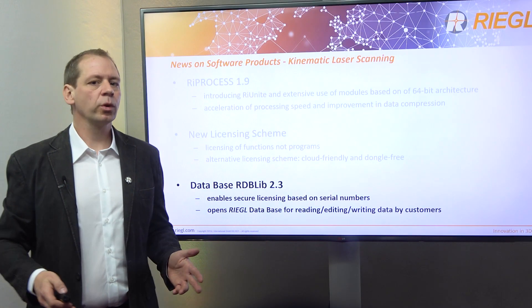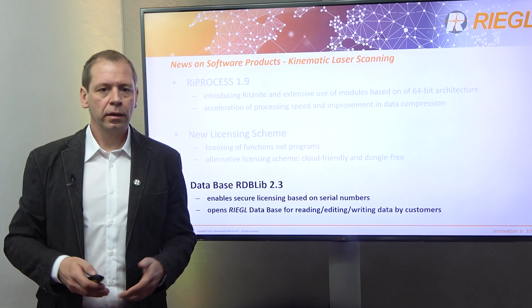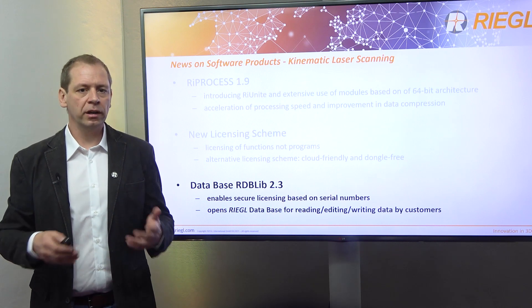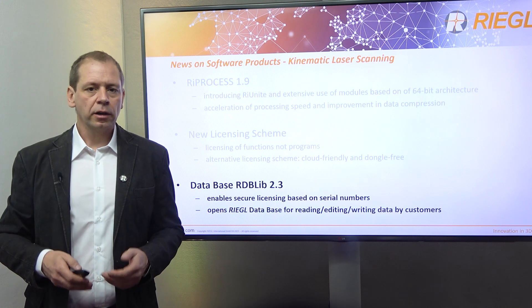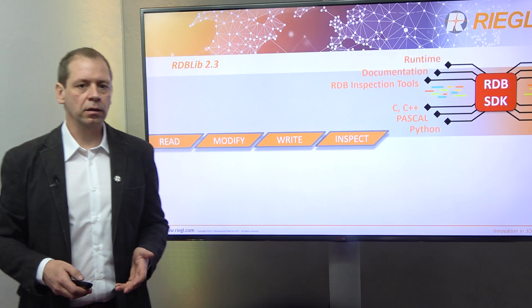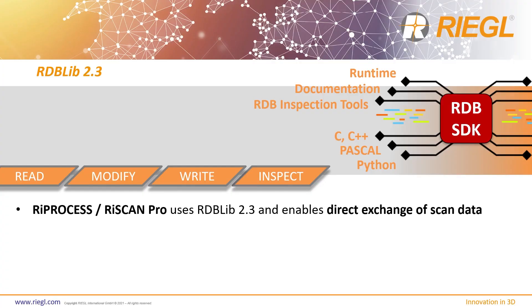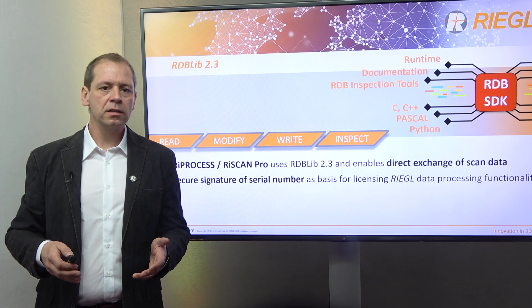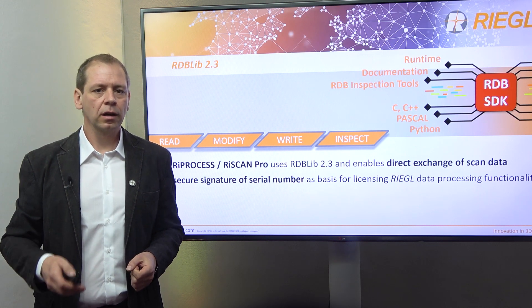The Regal RDB database is one of the keys to high processing speed, fast access to 3D scan data, and low data volume at the same time. It enables secure licensing based on serial numbers of distinct instruments. The new RDB lib 2.3, a freely available programming library, opens the RDB database for reading, editing, and writing to our customers. The RDB lib is a performant library for accessing real point cloud data and is therefore utilized by our own software, RIPROSIS and RISCAMPRO. It enables direct exchange via drag and drop of scan data acquired from kinematic laser scanning platforms as well as static terrestrial laser scanners. Furthermore, the RDB lib is the basis for licensing data processing functionality by including a secure signature derived from the instrument serial numbers included in each processed file.